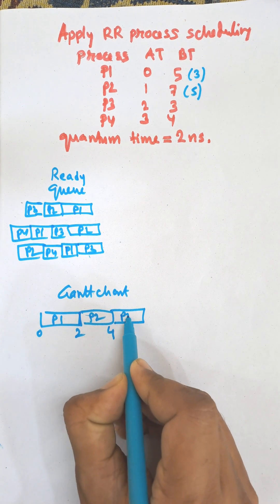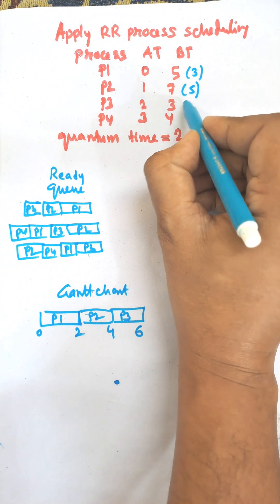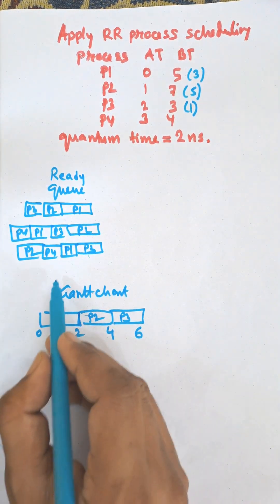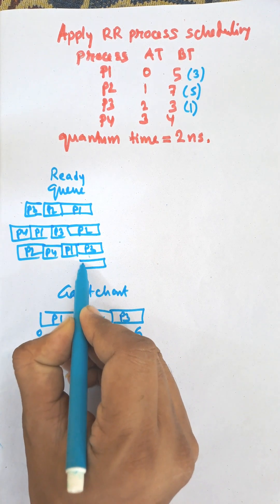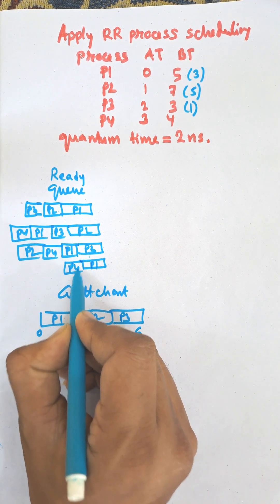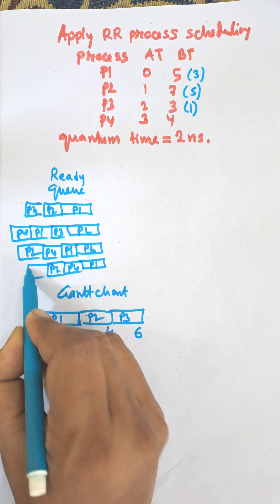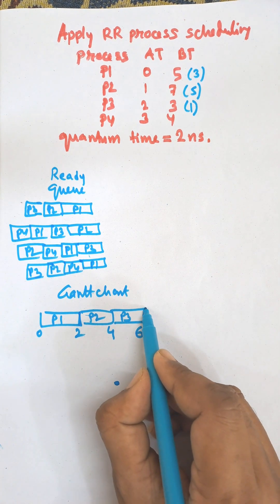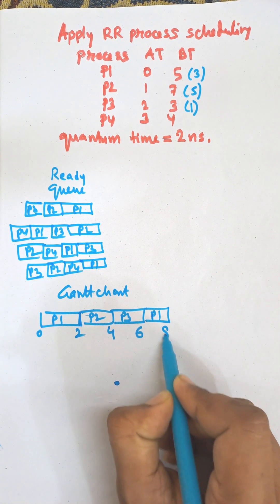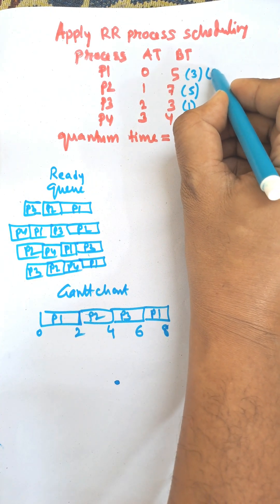P3 executes for two nanoseconds, remaining time is one. Then it goes to the end of the queue. The order is P1, P4, P2, P3. Then P1 will execute two nanoseconds up to time 8, remaining time is one.